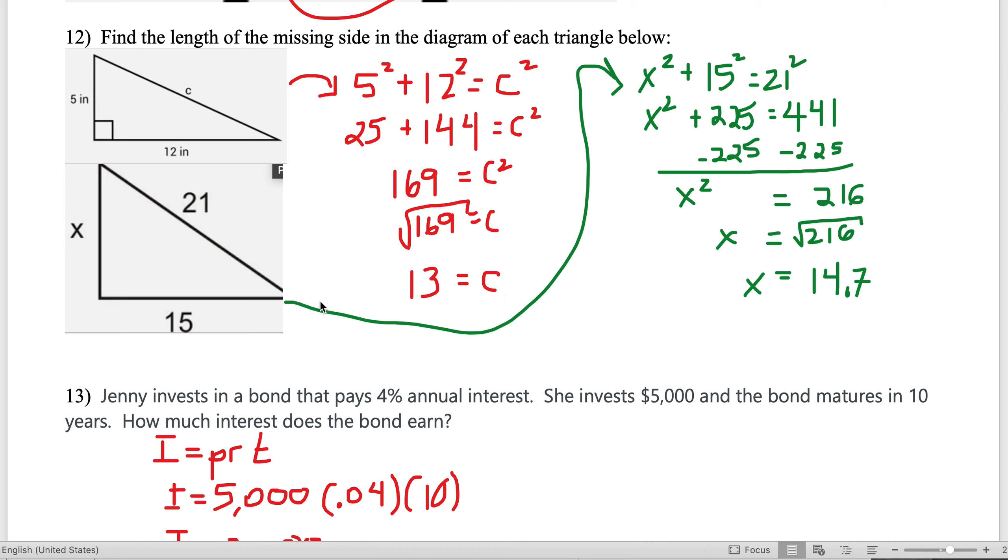The legs are 5 and 12, so 5² + 12² = c². 25 and 144 is c²—they're on the same side, so same operation, combine like terms: 169 = c². Square root both sides, c is 13.